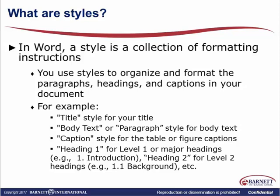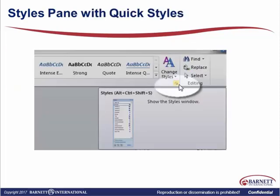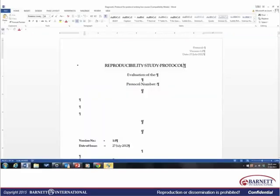Word has a variety of built-in styles, usually found on the Home tab. For updated versions of Word, there's also a Quick Styles tab, which started in 2007. Your Quick Styles panel looks like the panel shown here at the top with a bunch of different styles. You can open that Quick Styles panel and get a drop-down. The long bar up in your toolbar is your Quick Styles panel.